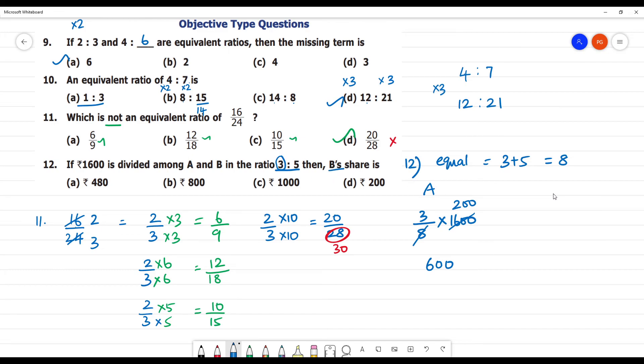Now, B share. B share, total parts 8 multiplied by 1600. 5 by 8 multiplied by 1600. So, 5 times 200, 10 and this is 1000 rupees, 1000 rupees. The answer is C, okay?